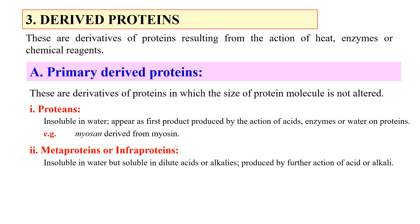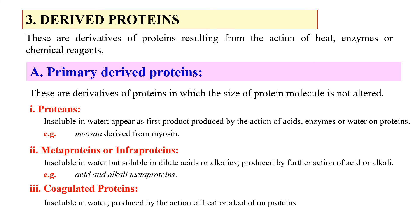Second, metaproteins or infraproteins. These are insoluble in water but soluble in dilute acids and alkalis. They are produced by the further action of acid or alkali. Examples include acid and alkali metaproteins. Then, coagulated proteins — these are insoluble in water and produced by the action of heat and alcohols on proteins. An example is coagulated egg white.